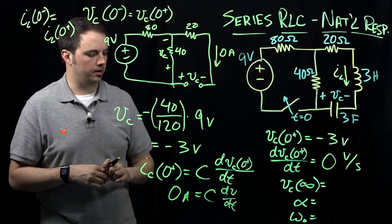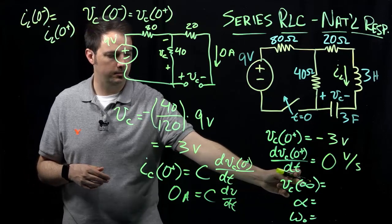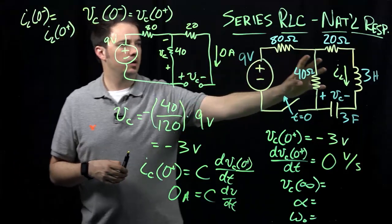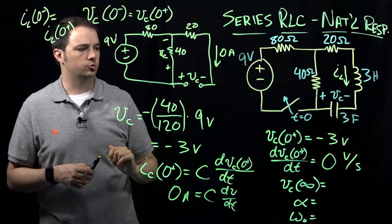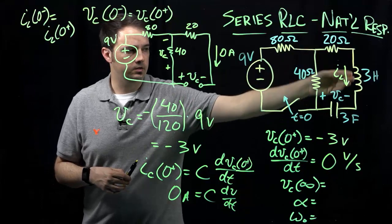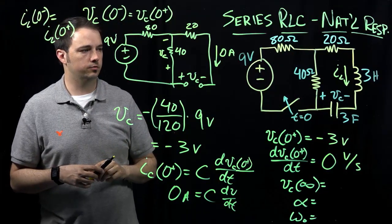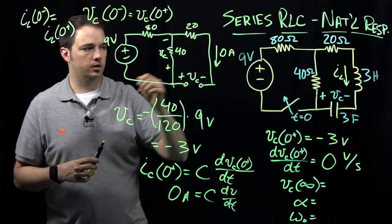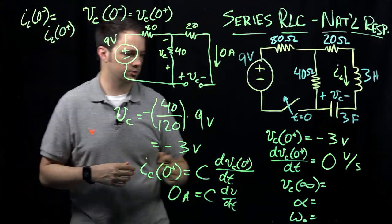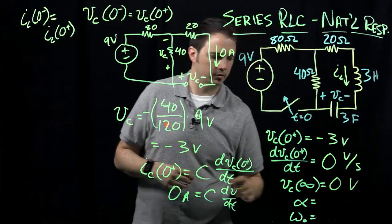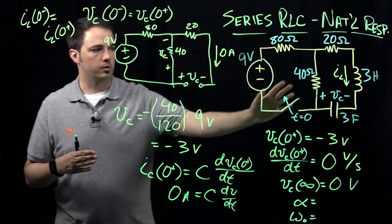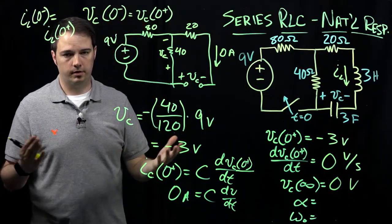Now thinking about how to evaluate the final voltage VC as time goes to infinity. After the switch has been opened, the 9-volt source and the 80-ohm resistor are disconnected. The remaining circuit has no other sources of voltage or current, so as time goes to infinity, all voltages and currents go to zero. That's just a consequence of having only passive elements remaining in the circuit.